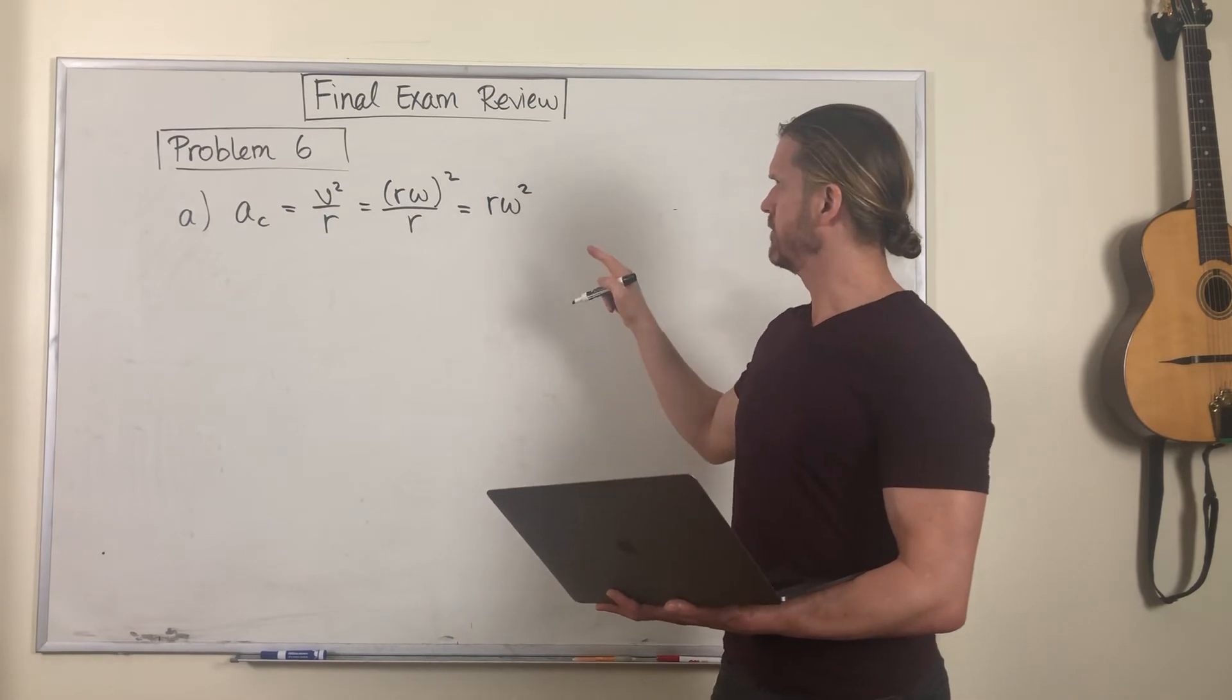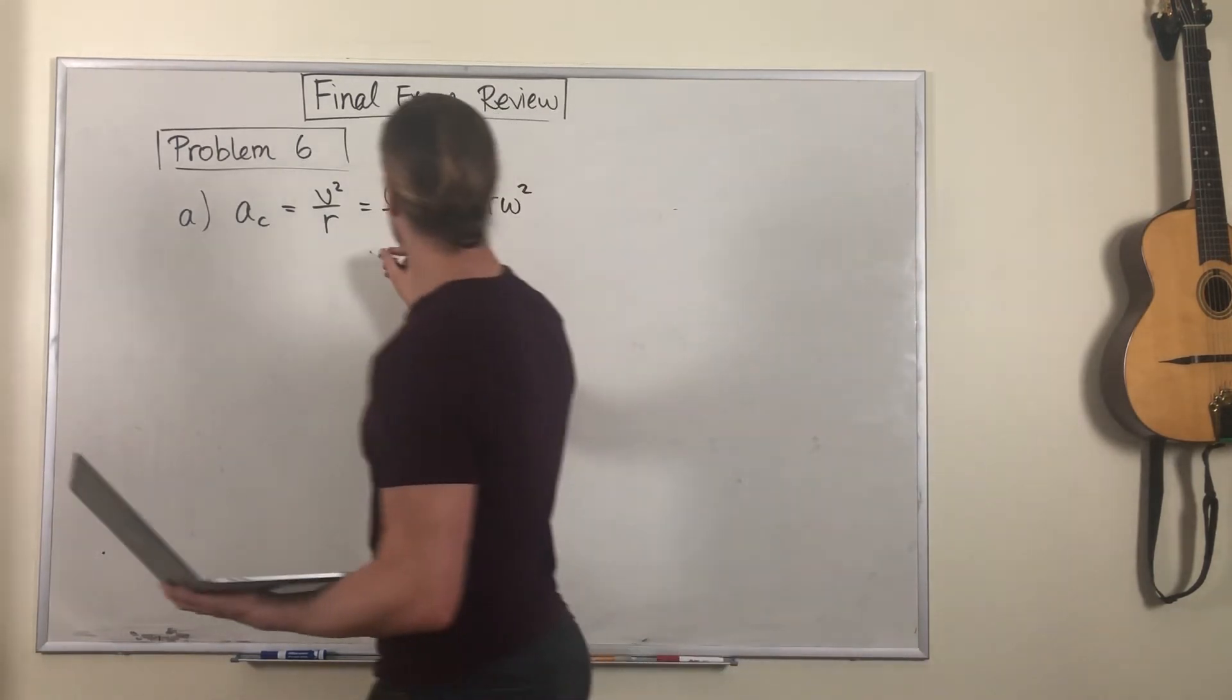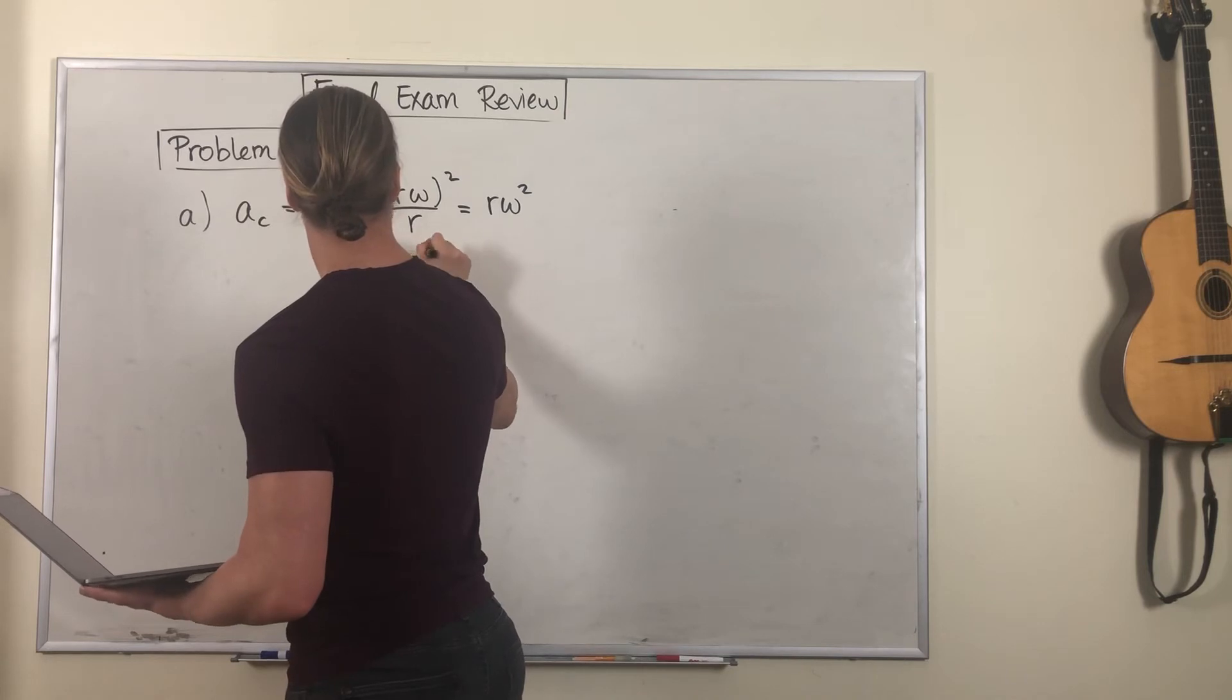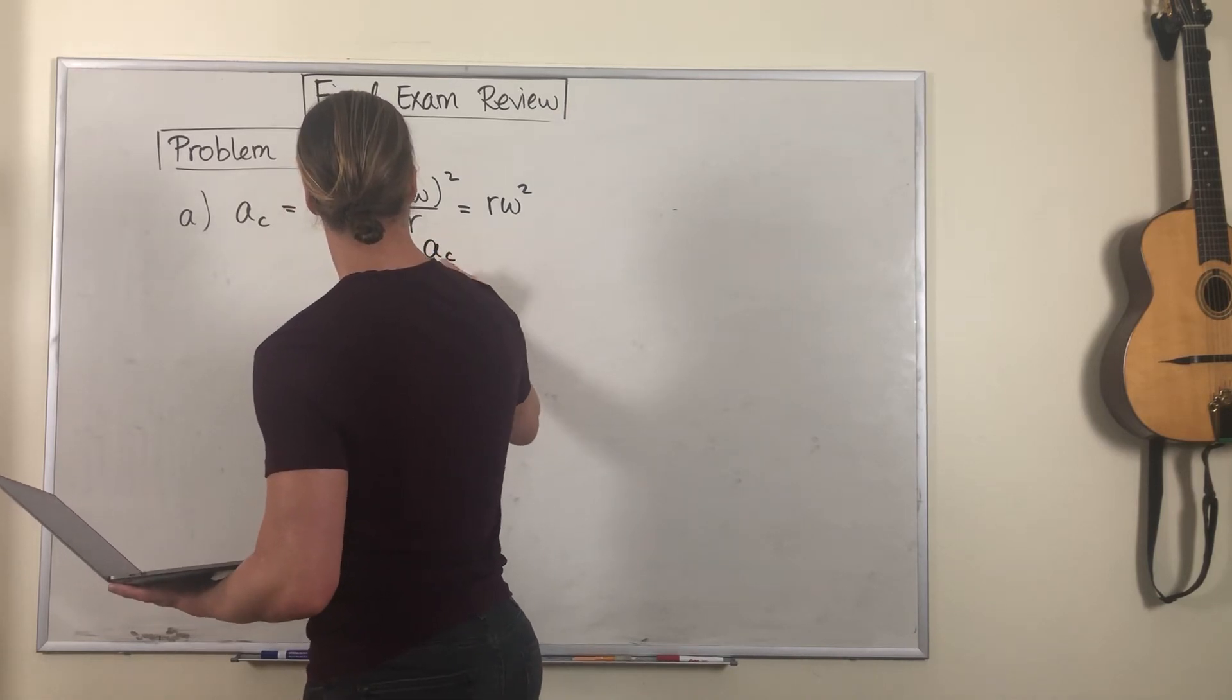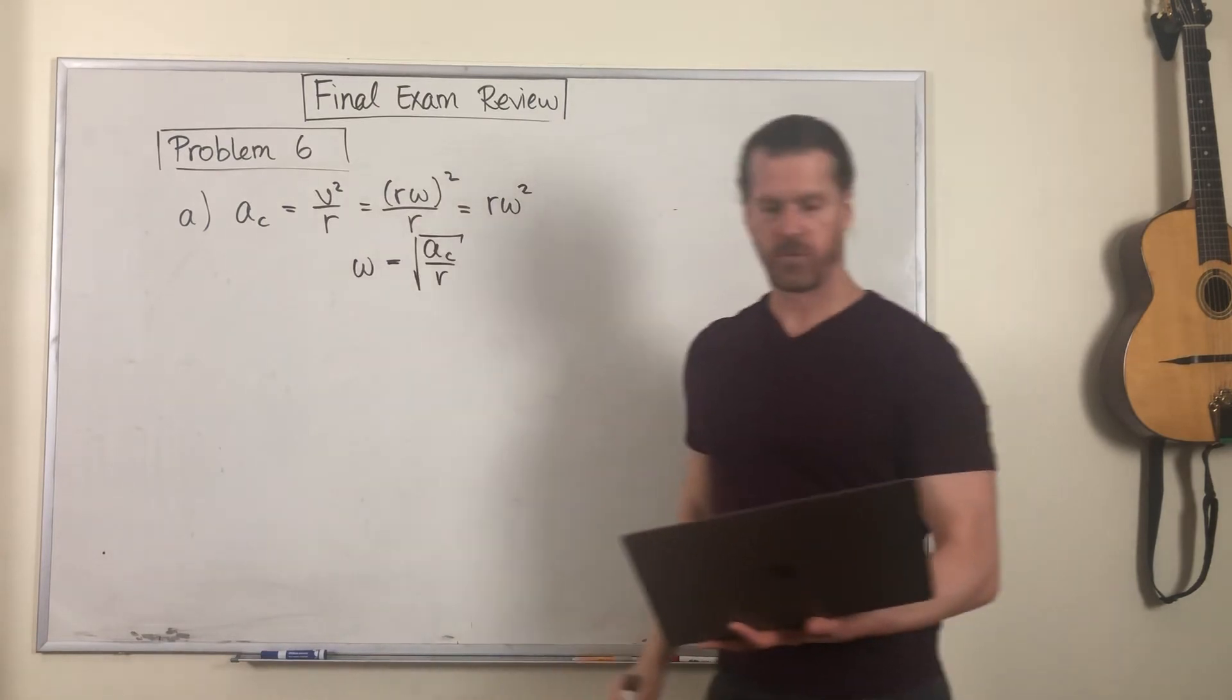And we want to find omega. So that is the square root of AC over R.